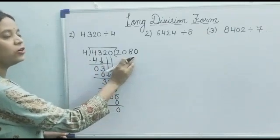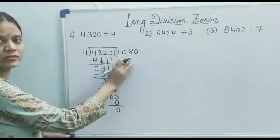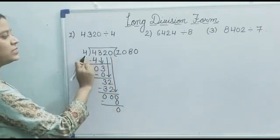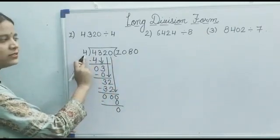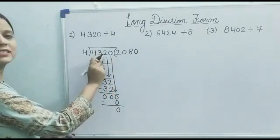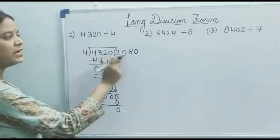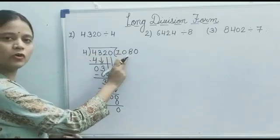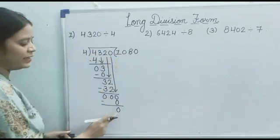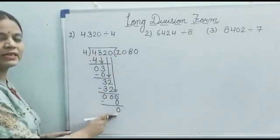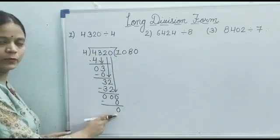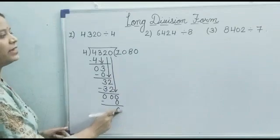Now we have solved this division and our answer is 1080. The answer is called the quotient. This is the divisor, this is the dividend, this is the quotient, and the remainder is 0.